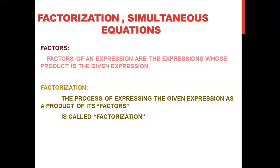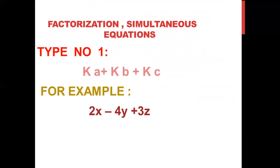The process of expressing the given expression as a product of its factors is called factorization. There are many types of factorization. When 2 or 3 terms are given, we take the common factor. When 4 terms are given, we make pairs and take common from each pair. We also use formulas: (a+b)², (a-b)², and a²-b². All these formulas and terms are not new for you — you already know them. The first type in exercise 6.2 has the general form Ka + Kb + Kc, where K is any constant term and A, B, C are variables.